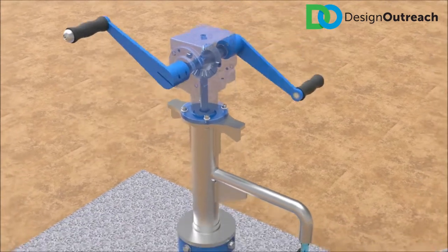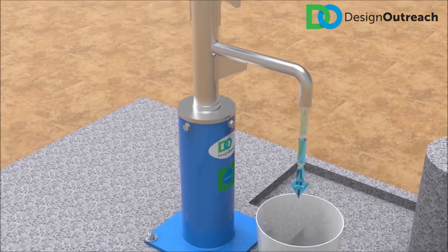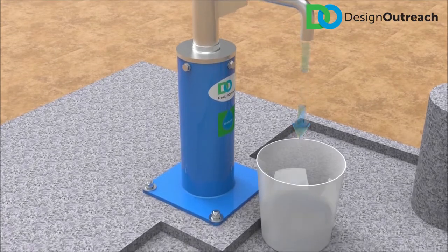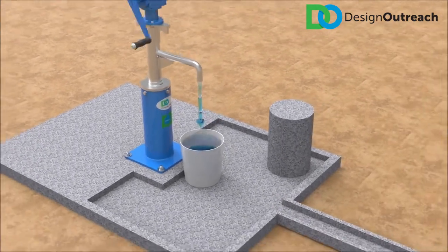When the handles rotate, the gearbox bevel gears are engaged and rotate the drive rod, which is connected to the rotor at the bottom of the well.